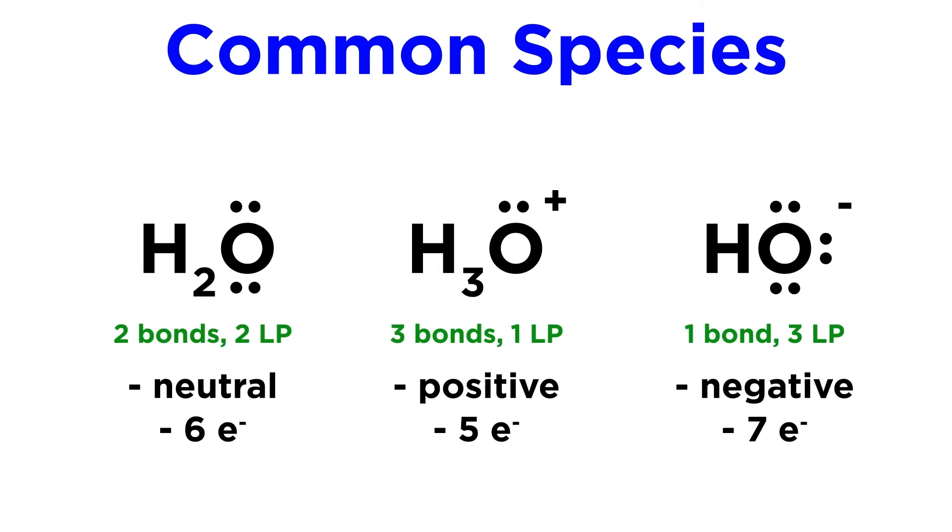Oxygen has six valence electrons, but these contribute six, five, and seven, respectively. So we have neutral oxygen, positively charged oxygen, and negatively charged oxygen, or an oxyanion, which we will see frequently.